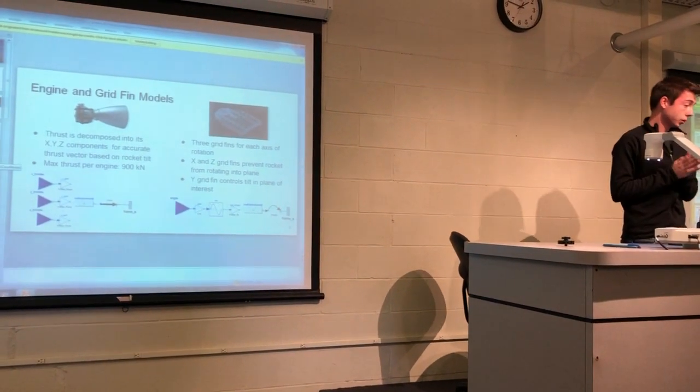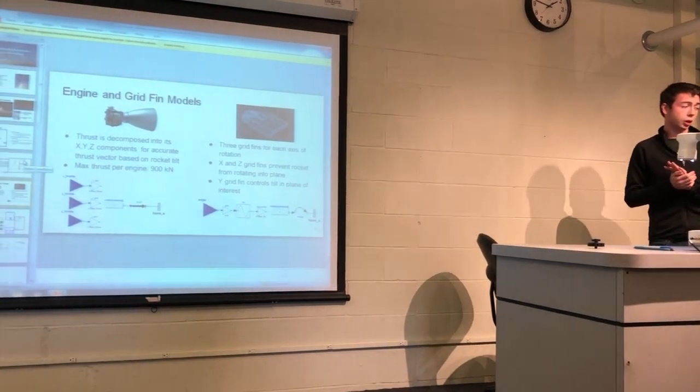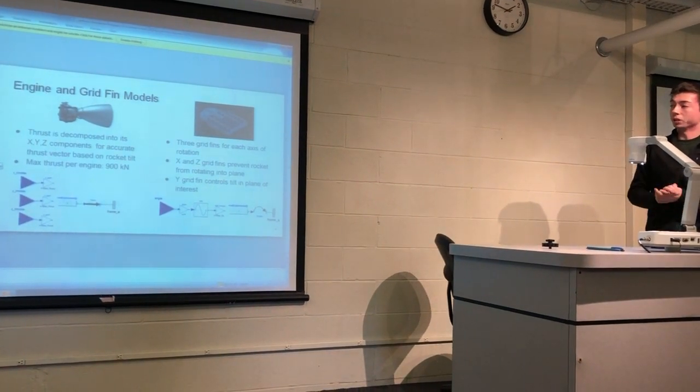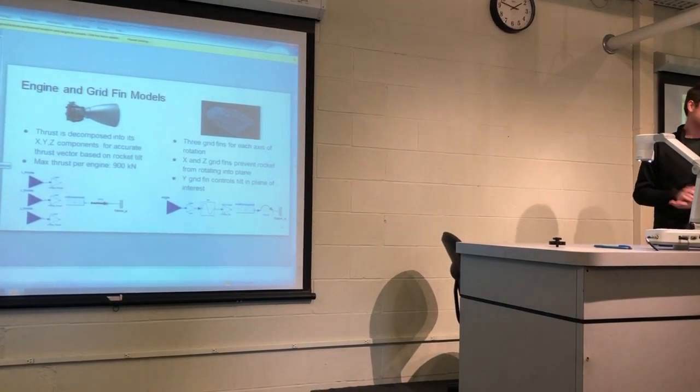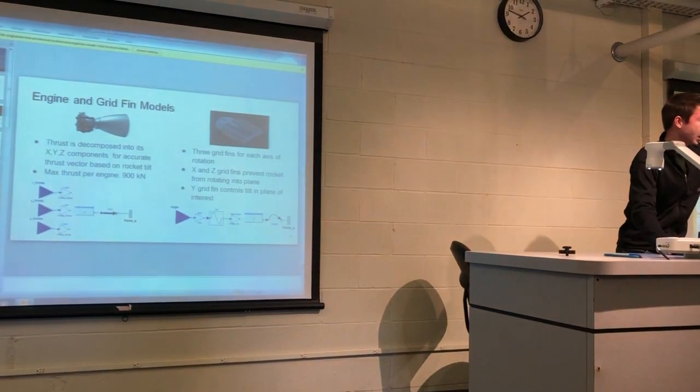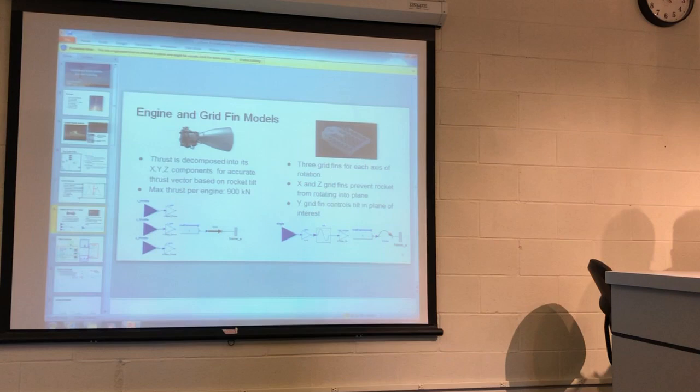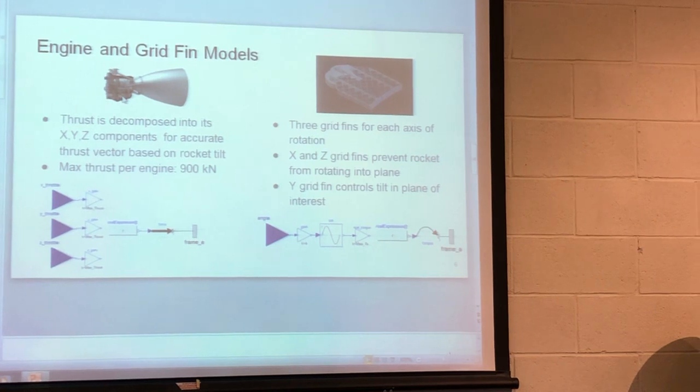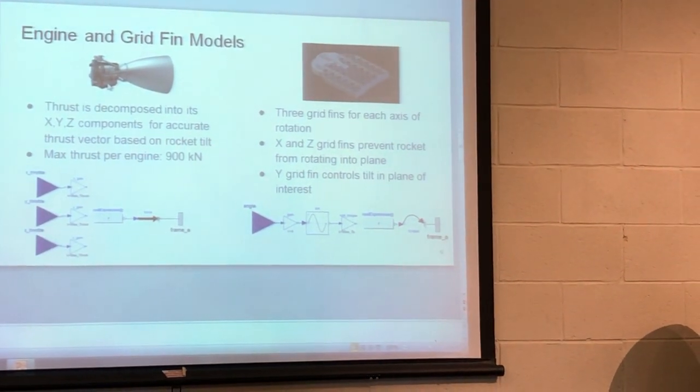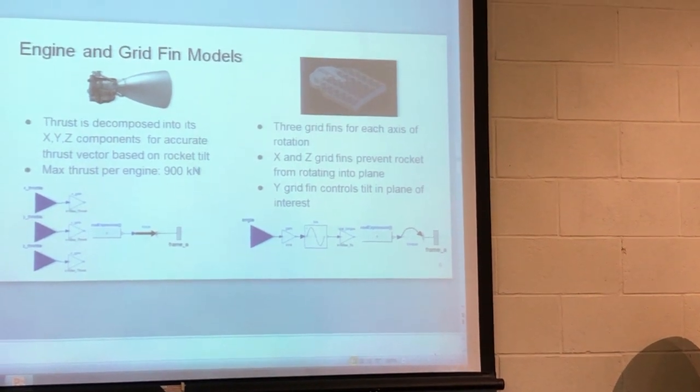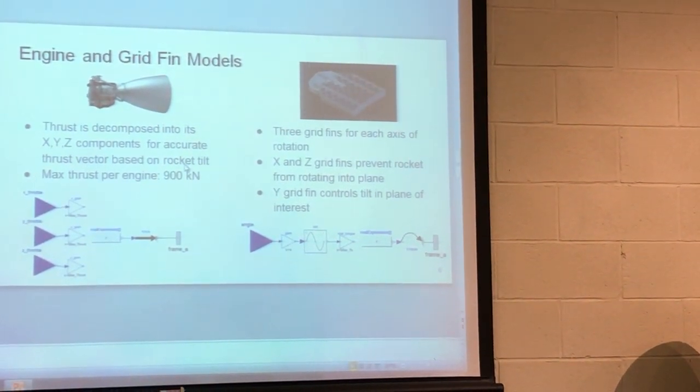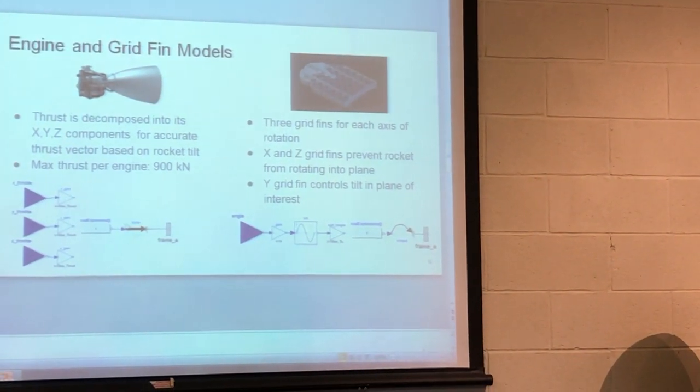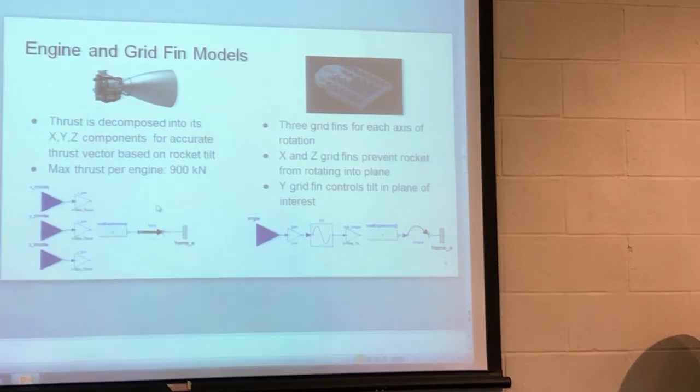The main thing I was trying to simulate was the controls. I wasn't really concerned too much about getting the actual components working realistically. I basically modeled this engine. It broke down the thrust components into the XYZ components to basically make sure the thrust was going parallel to the rocket trajectory angle. It basically had it set, the max thrust is 900 kilonewtons, which is pretty accurate for a Merlin engine on a SpaceX rocket. And that's all modeled by this force vector in this expression here.